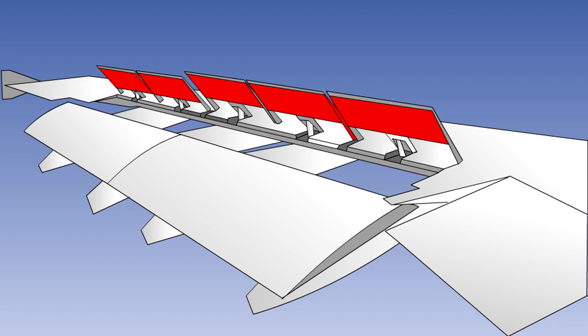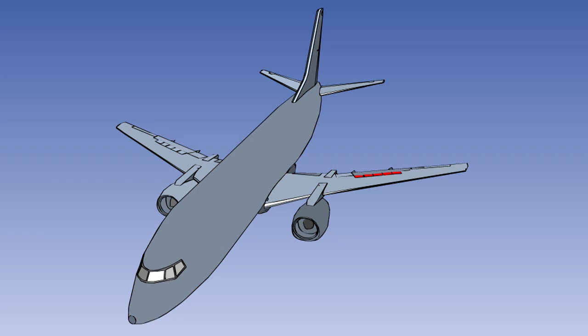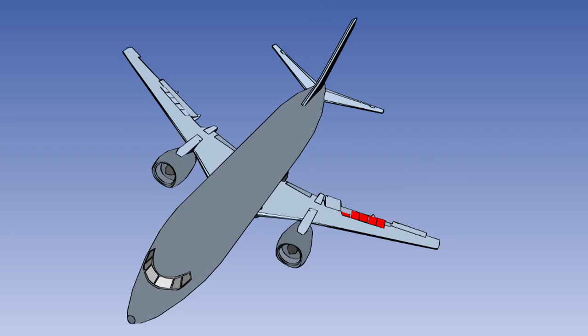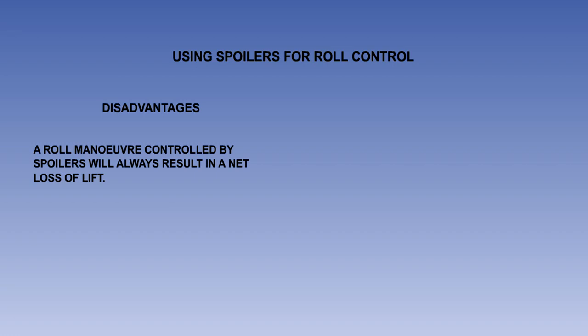Raising the spoiler panels will disturb the airflow over the wing and reduce the lift. When a roll is instigated, the spoiler panels on the down-going wing will deploy while those on the up-going wing will remain stowed. Unlike the aileron, spoilers cannot increase lift, and so a roll manoeuvre controlled by spoilers will always result in a net loss of lift.